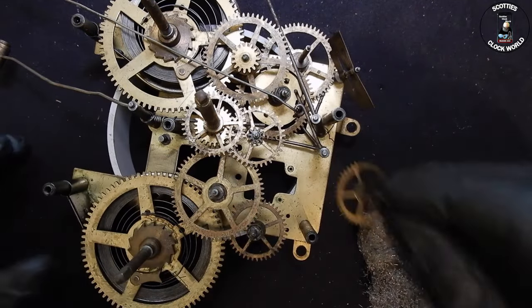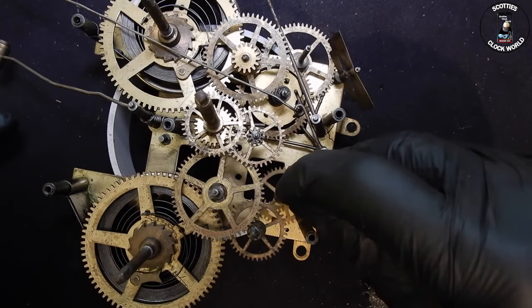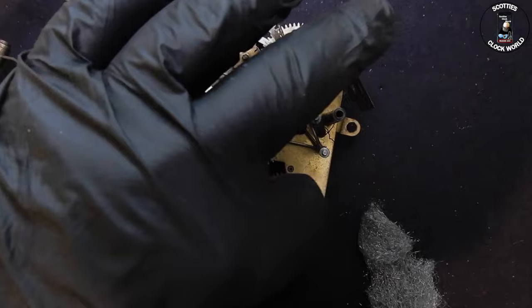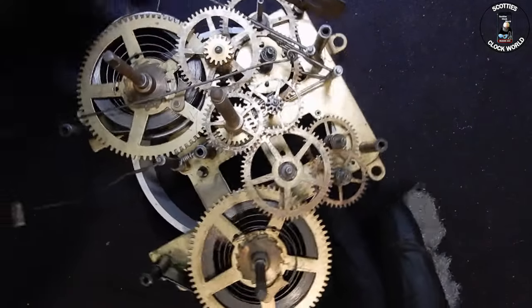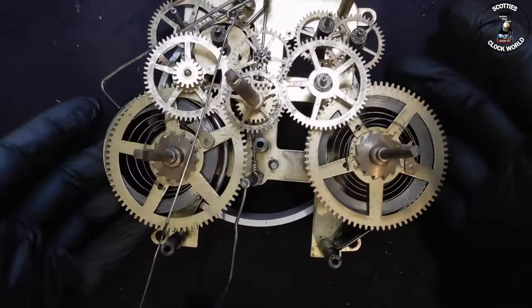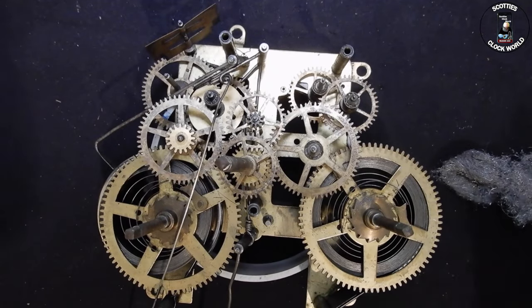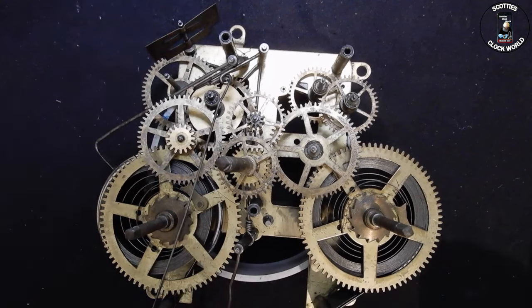And we'll slot that into there. And that is what our movement looks like, including seriously bent hammer wire down here. I'll clean my bench up, and we'll take the movement parts out.